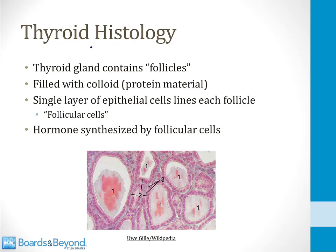When you look at normal thyroid tissue under the microscope, you see structures called follicles — large circular structures lined by cells with proteinaceous material called colloid in the middle. A single layer of epithelial cells lines each follicle; these are called follicular cells, and they are the cells that synthesize thyroid hormone for the body.